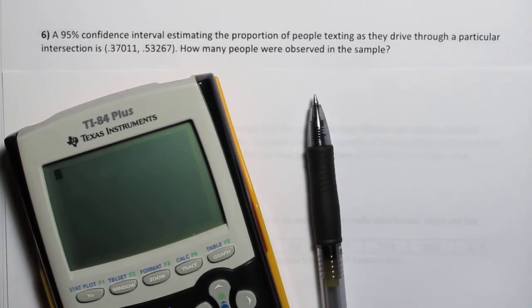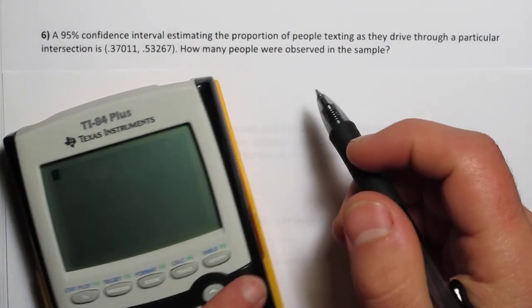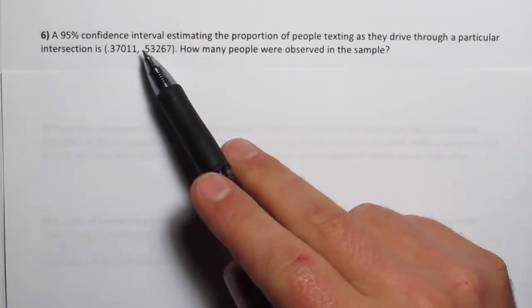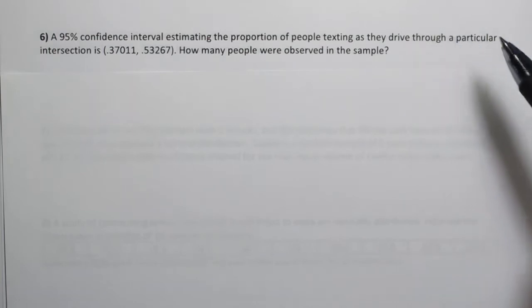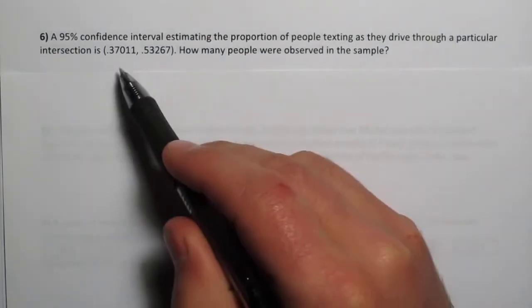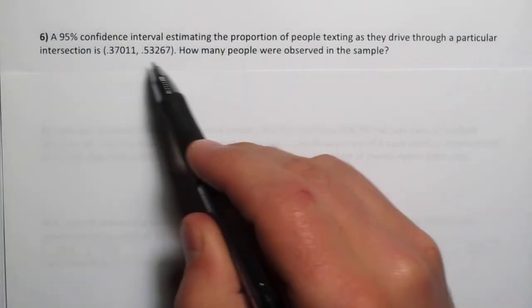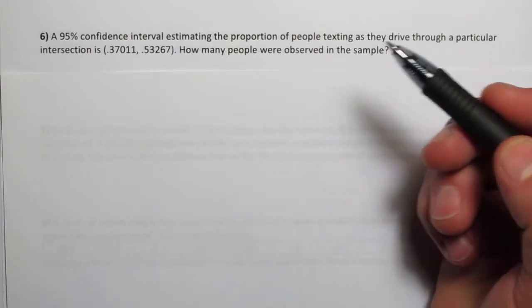On problem six, we're still assuming the conditions have been met, so let's jump right into it. A 95% confidence interval estimating the proportion of people texting as they drive through a particular intersection is that to that. How many people were observed in the sample?